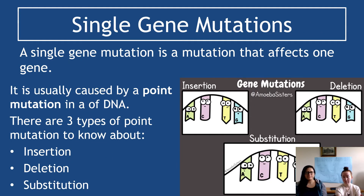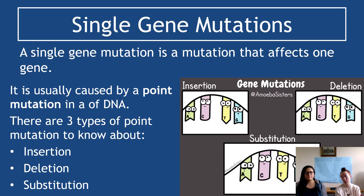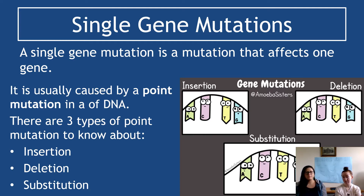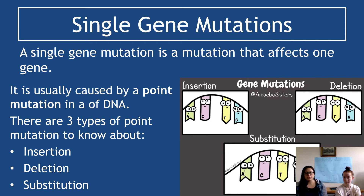We're going to look first at single gene mutations, which are caused by things called point mutations. There are three main examples: insertion, deletion, and substitution. Pretty much they are self-explanatory in their names. This graphic from the Amoeba Sisters shows it quite clearly, but we're going to run through all three features of them.